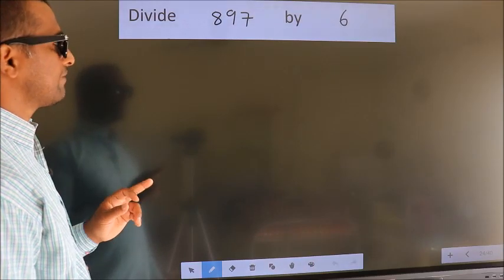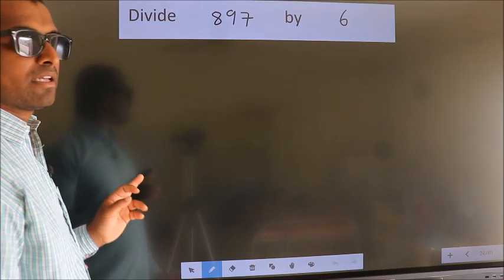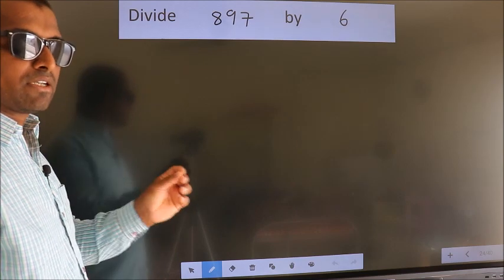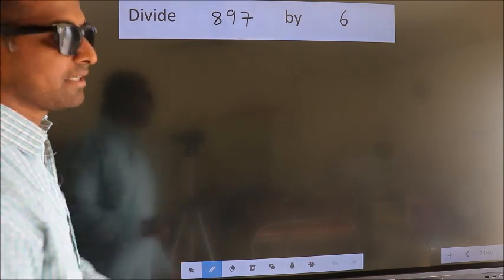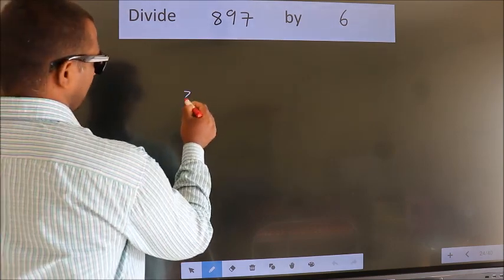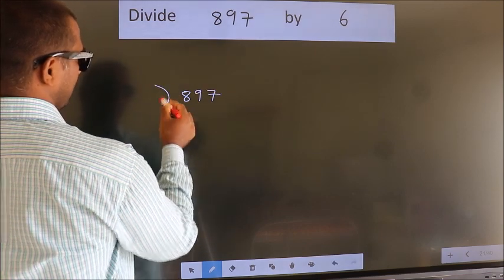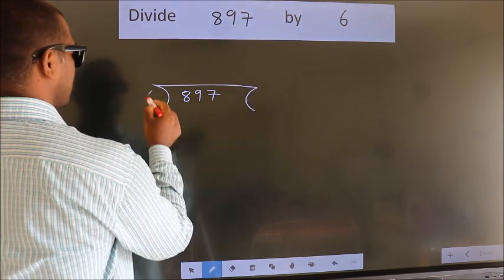Divide 897 by 6. To do this division, we should frame it in this way: 897 here, 6 here.